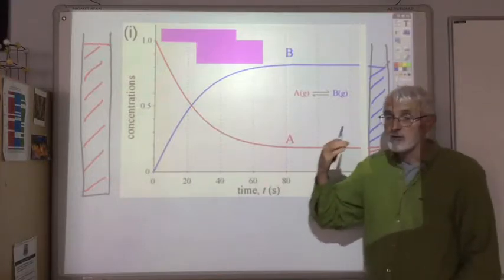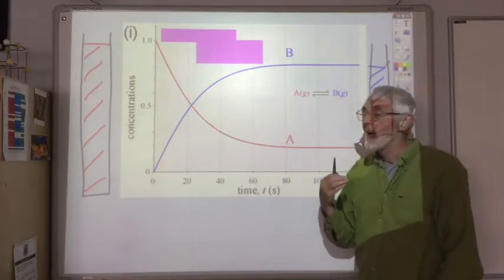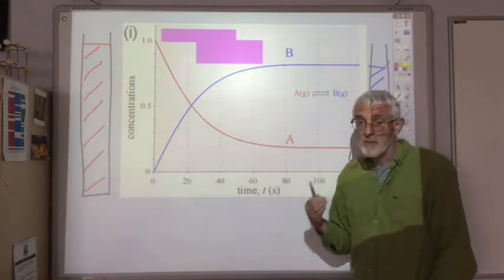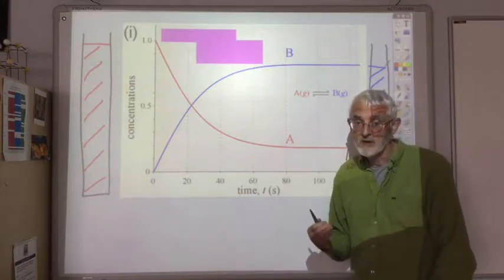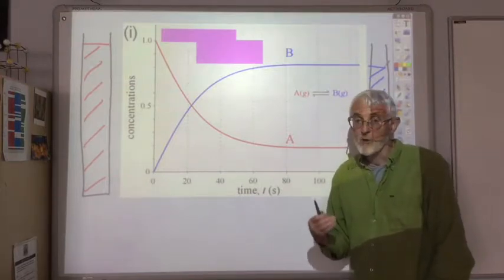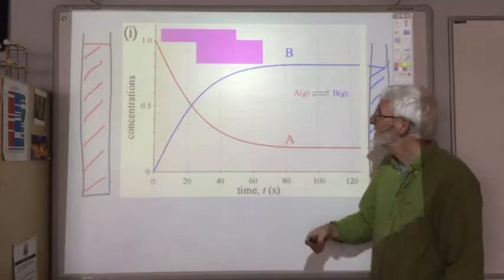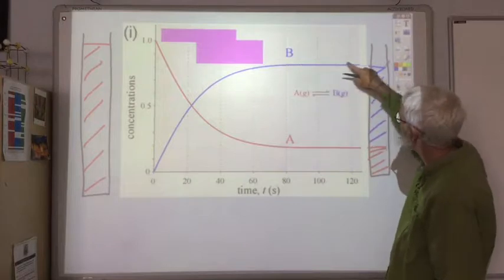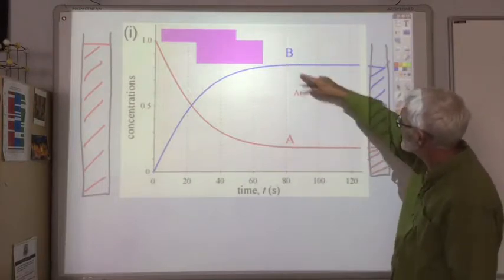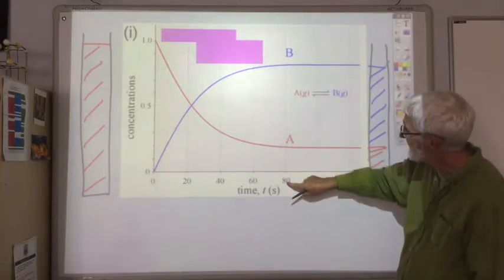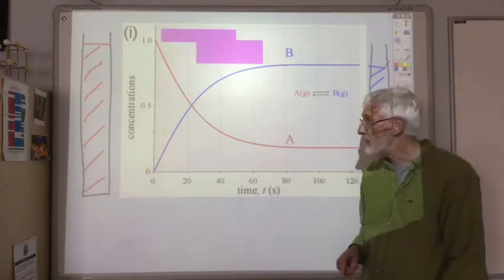Now, one important thing you have to do from a graph like this is identify the point at which equilibrium is reached. So equilibrium is reached when the concentration of the products and reactants no longer change. So that's when they sort of flat line. So in this case, it's taken about 80 seconds for the equilibrium to be reached.